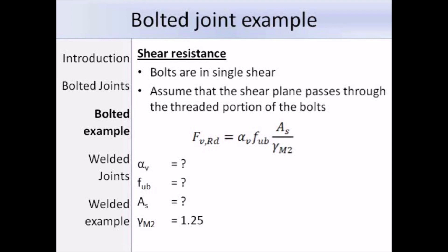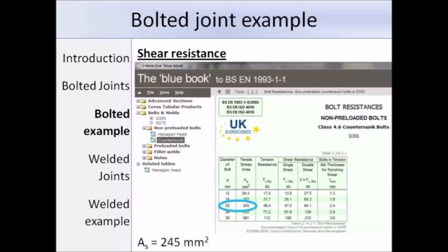There are a number of terms we need to determine before we can work out the shear resistance: alpha V, Fub, and As. We should already know that gamma M2 equals 1.25. We need to determine As, the tensile stress area of the bolt, by referring to the blue book. Here is a screenshot from an interactive blue book, and for an M20 bolt, As is equal to 245mm².